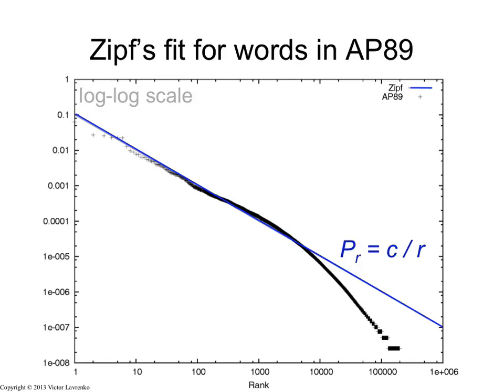Here's an example of Zipf's law plotted for an entire corpus. So this is Associated Press 89. We take a bunch of documents, compute their frequencies, sort those frequencies by ranks, and plot it.